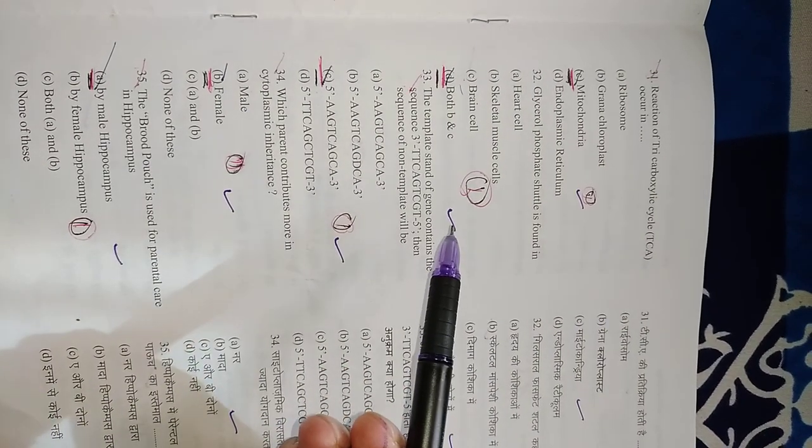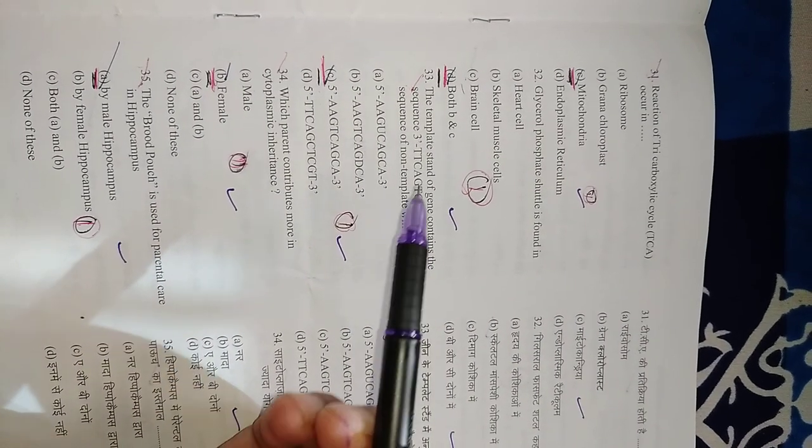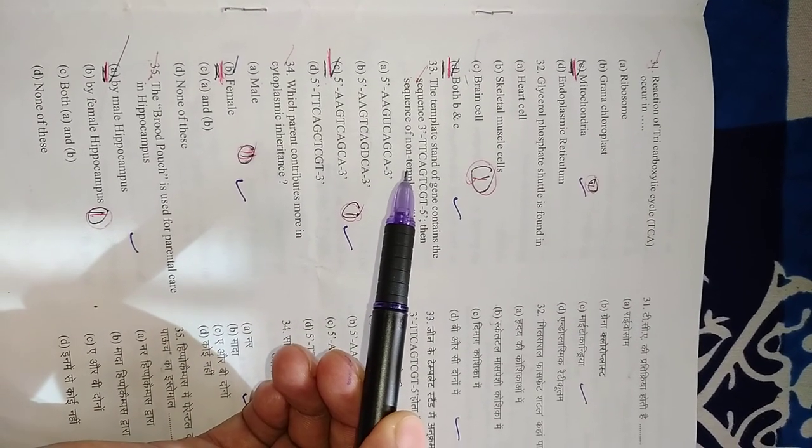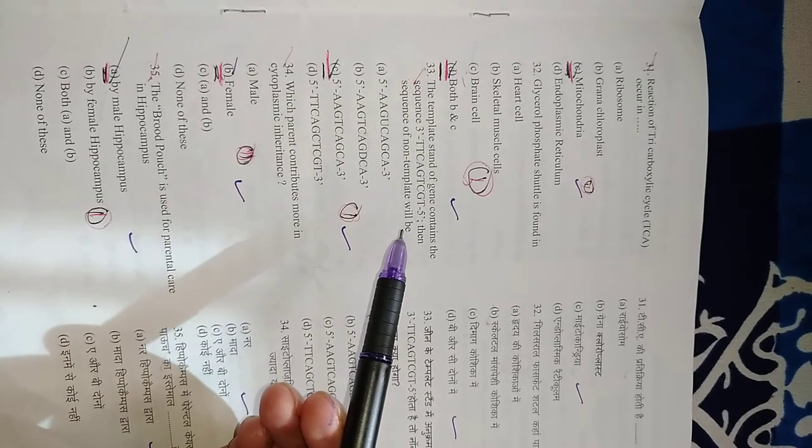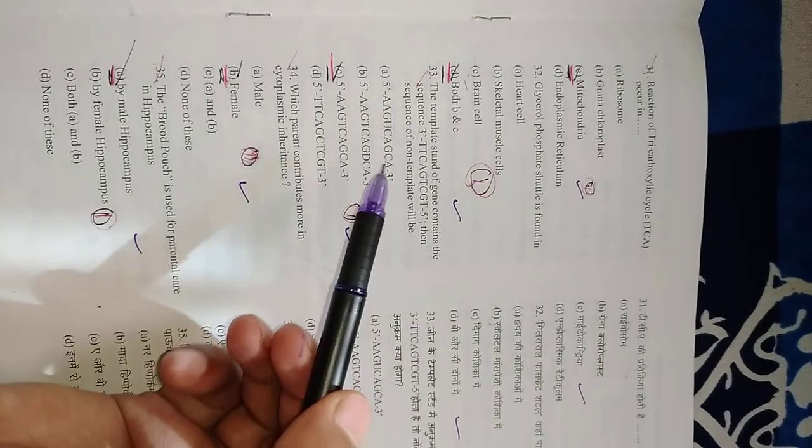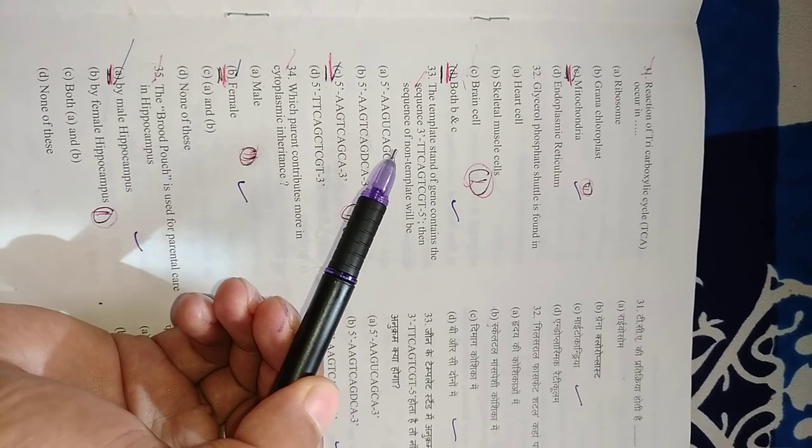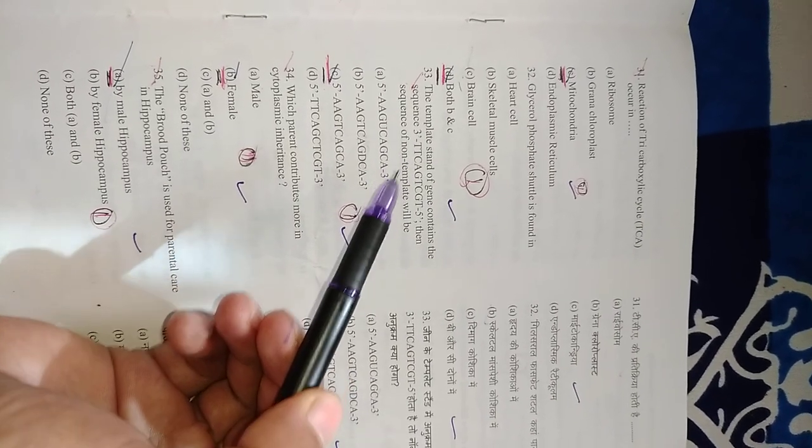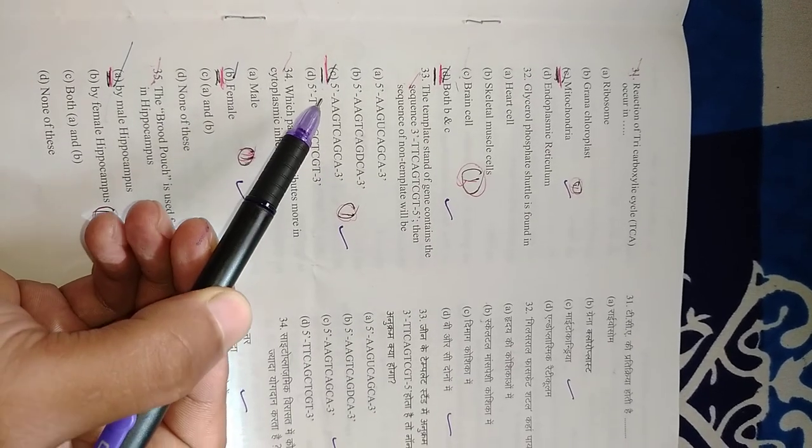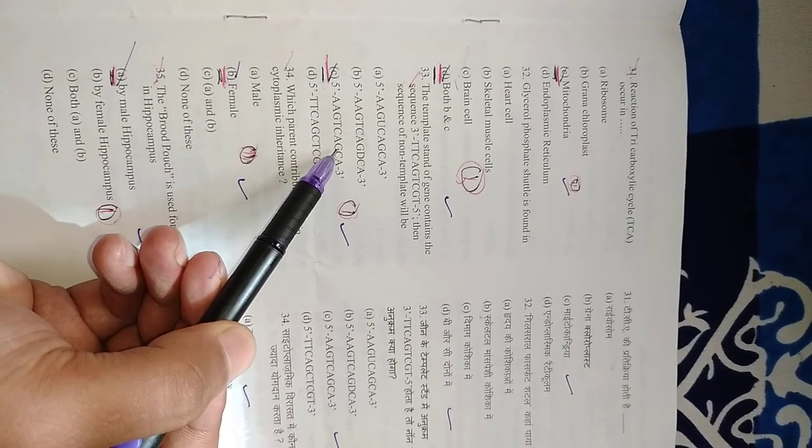Question number 33: The template strand of a gene contains the sequence TTC AGT CGT. Then the sequence of the non-template will be—as you all know, the complementary for T is A and for C is G. So find the complementary, and the complementary is AAG TCA GCA. Right option is C.